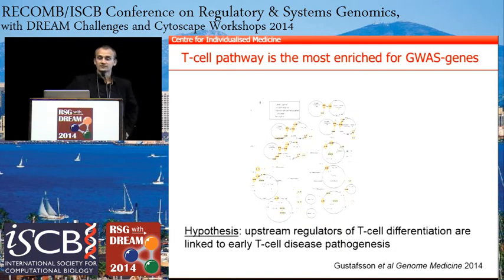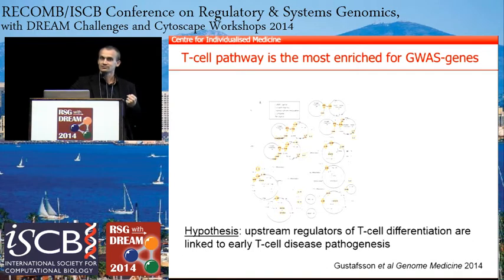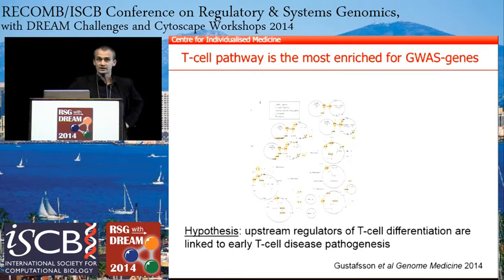Another motivation of this study is that the T-cell pathway is the most enriched for SNPs — disease-associated SNPs. We mapped all disease-associated SNPs to the nearest genes, giving us a set of genes we call JIVAS genes. As we have heard, these SNPs are often non-coding, but when you call these genes JIVAS genes — those that have a SNP close to them — the T-cell pathway is the most enriched for JIVAS. Our hypothesis is that if we identify upstream regulators of the T-cell differentiation pathway, we can link that to early T-cell disease pathogenesis and the pre-symptomatic stage.